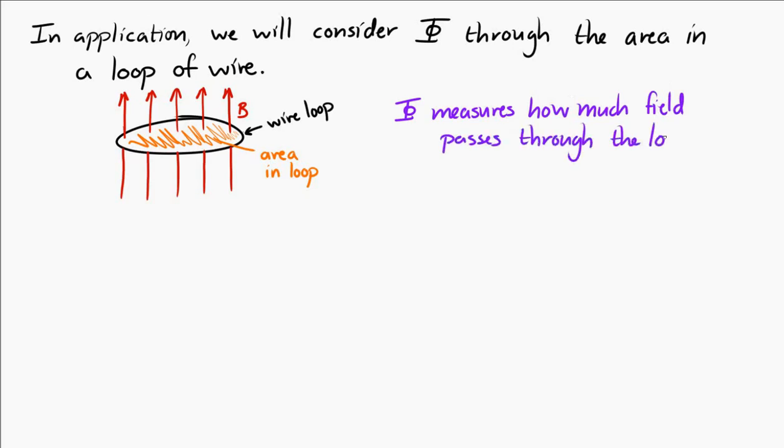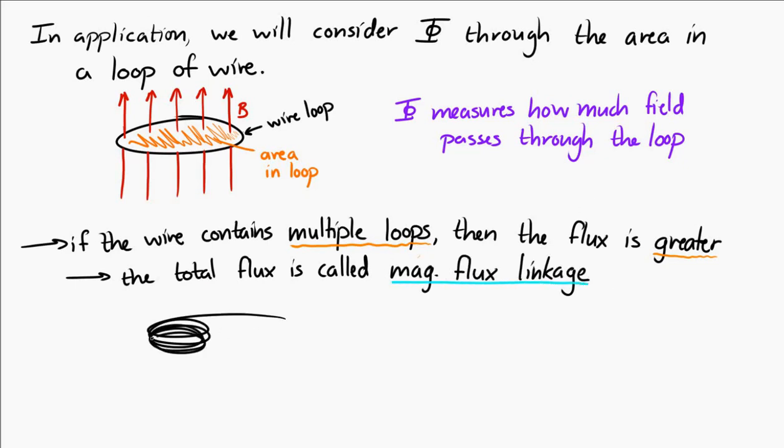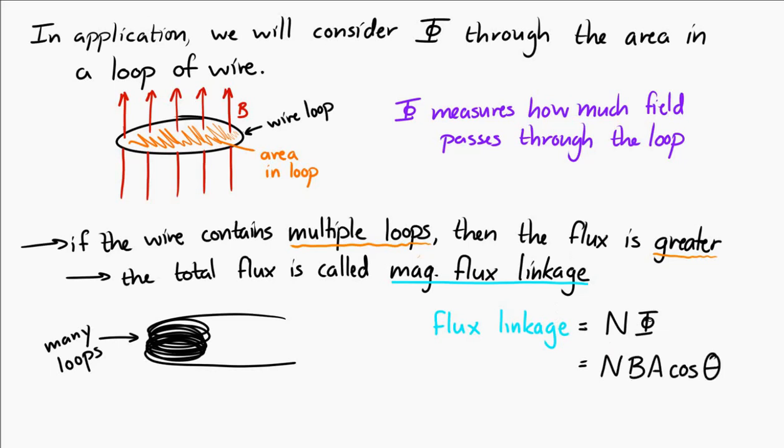Now, if the wire is made of multiple linked loops, kind of like this, then the flux will be greater. There's more loops for the field to go through. The total flux in this case is called the magnetic flux linkage. And we can say that the magnetic flux linkage is equal to N times the flux through a single loop. And the magnetic flux linkage is equal to NBA cosine theta, where N represents the number of loops.